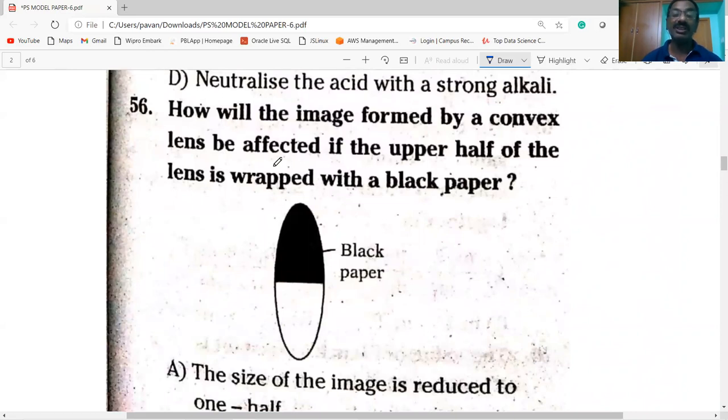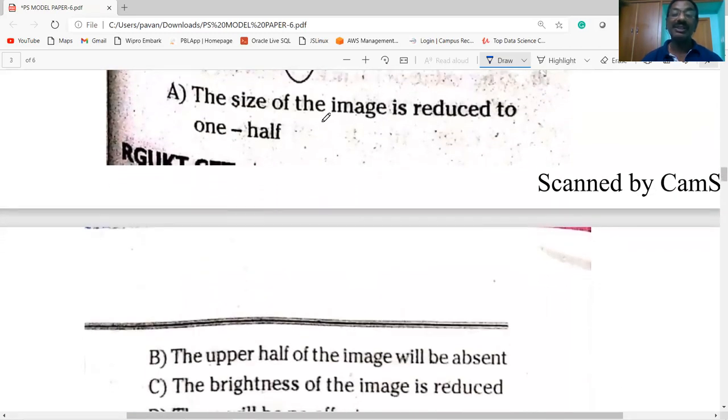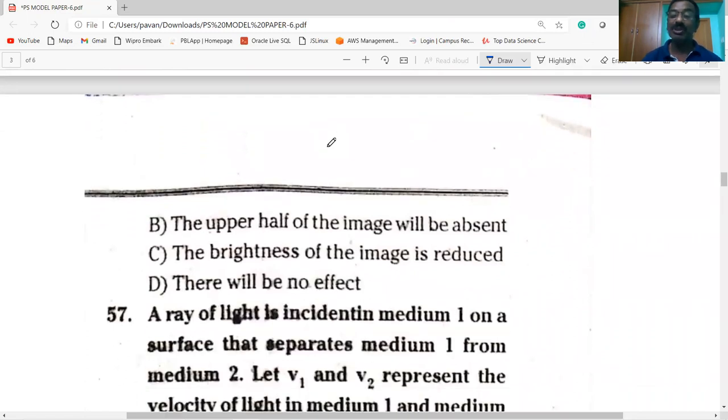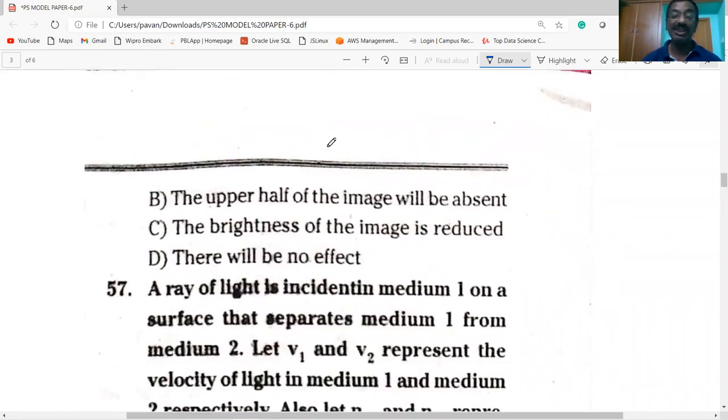Next question on screen. How will the image formed by convex lens be affected if the upper half of the lens is wrapped with a black paper? The brightness of the image is reduced. Option C is correct.